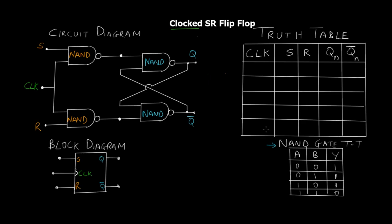We'll start off with the different cases by taking different input scenarios. In case one we are going to assume the clock signal to be zero. Now what happens when the clock is zero? The first and second NAND gate get zero, and according to the NAND gate truth table, whenever there is a zero in any of the inputs of a NAND gate the output is always going to be one.